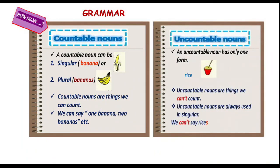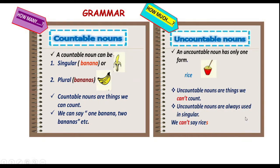Uncountable nouns are things we can't count. Uncountable nouns are always used in singular. For example: rice — we can say 'rice'. And we use 'how much' to make questions.